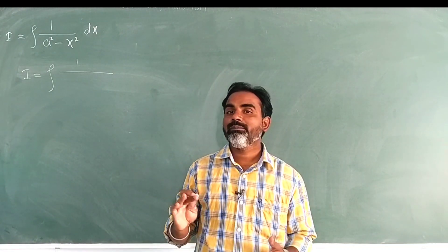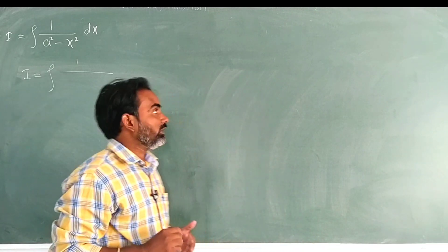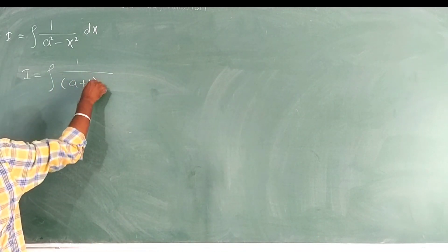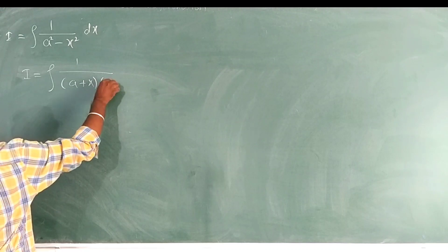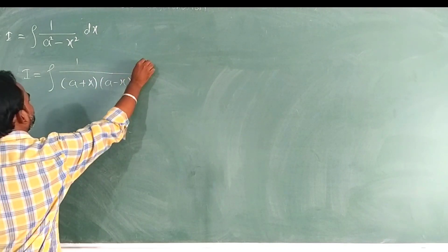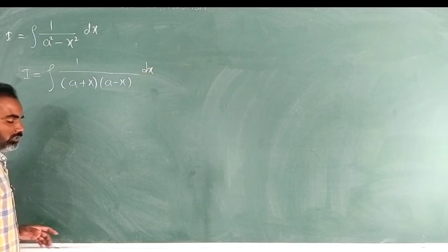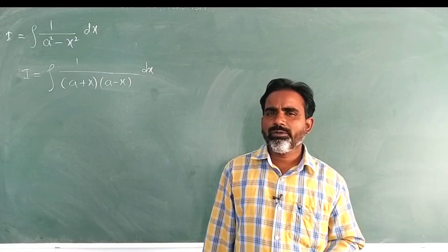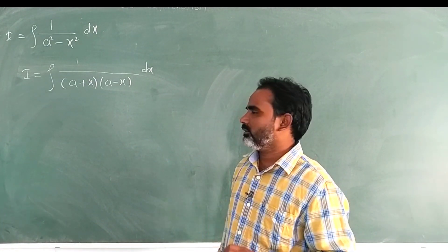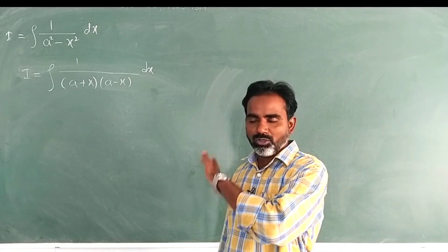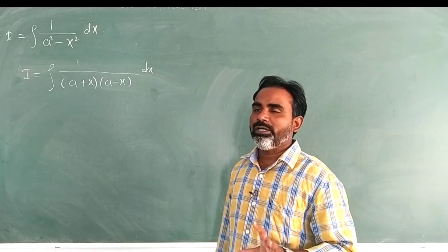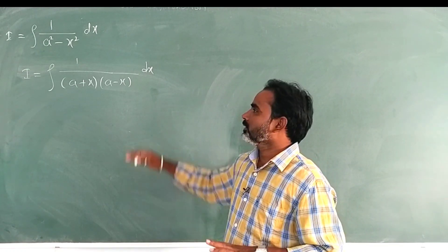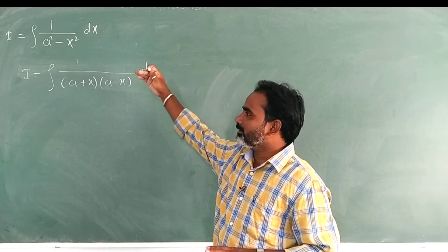We apply the a-squared minus b-squared formula: (a+x)(a-x), with respect to x. This is the problem. But I will solve this in a simple way — by working with the numerator and denominator.